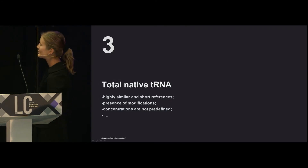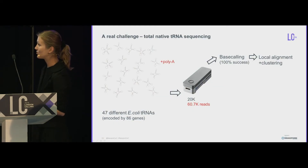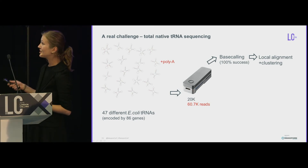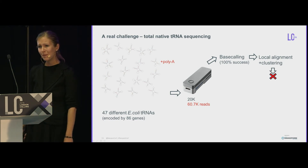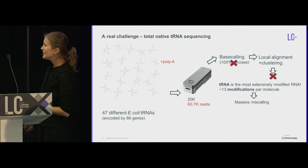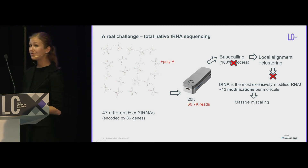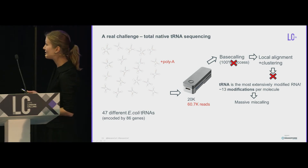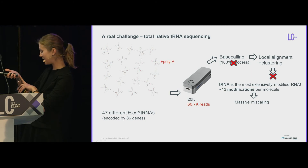We also tried to sequence total native tRNAs — this is work in progress. Native tRNAs are more complex: there are 47 species, and we also poly-A tailed them. However, we failed to do any alignment or clustering. The problem, as we think, is that tRNA is the most extensively modified RNA species, with 13 modifications per 75-nucleotide read length — basically every fifth base is modified — and with existing base callers this may cause massive miscalling.